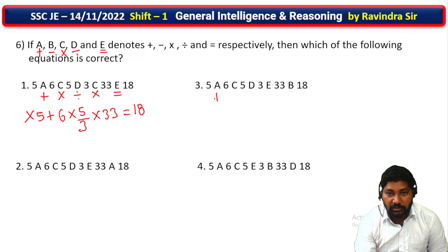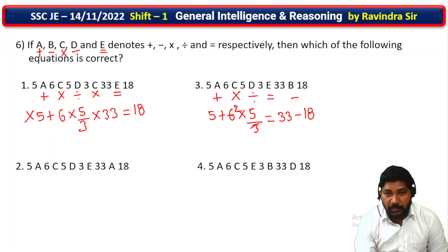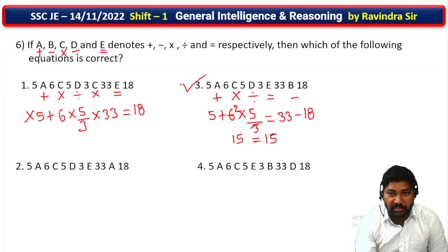Second option: A place will be plus, C place will be equal to, D place will be division, E place will be equal to. Checking: 5 plus 6 into the squared value equals 3. Computing: 5 into 2 will be 10, then plus 5 is 15. Left side is 15, right side minus 6 is also 15. Left side and right side are equal — third option is correct.